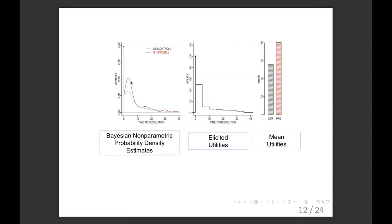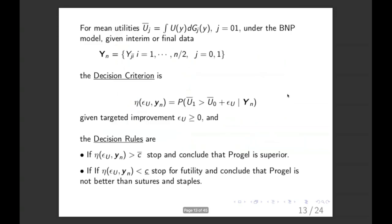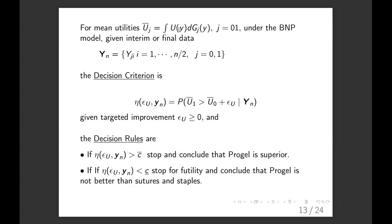And so the technique here is instead of using T, we're going to use U of T to make decisions. The decision making scheme, I've drawn the pictures of the null and alternative distributions again. Here are the elicited utilities that they induce. And here are the mean utilities under the two hypotheses. The mean utility, U bar sub J, is the mean utility under the J-th distribution given the data. And the decision criterion is this eta function. It says, what is the probability the mean utility with ProGel exceeds the mean utility with standard of care by some epsilon given the data?